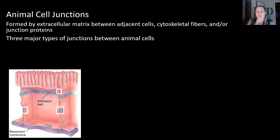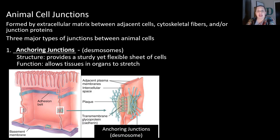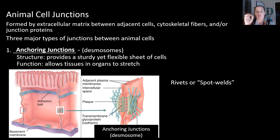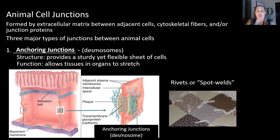In animal cells, there are a lot more junctions that can be present, formed by the extracellular matrix between adjacent cells using the cytoskeleton and some junction proteins. There are three major types. The first are called anchoring junctions, also known as desmosomes. These provide sturdy yet flexible sheets of cells, and their function is to allow tissues and organs to stretch. They kind of look like rivets in a ship or spot welds. Structures in us that really rely on these are your heart, your stomach, which stretches when you eat, and your bladder, which stretches with urine.